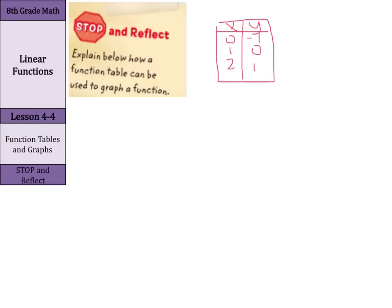And from that, you know, we can make ordered pairs such as 0, negative 1, 1, 0, and 2, 1. So,